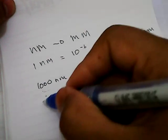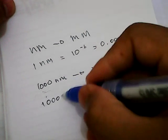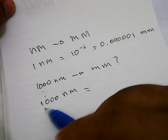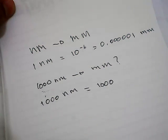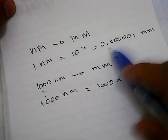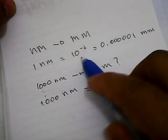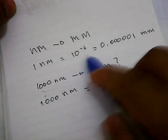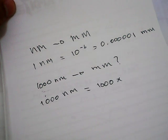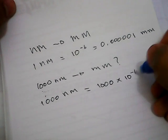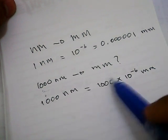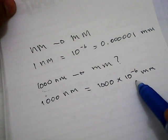We write 1000 nanometers, give it an equal sign, and write 1000 again. Then you need to multiply it with this number. I will use this number because it's more flexible to use in this equation. We multiply it with 10 power minus 6 millimeters.